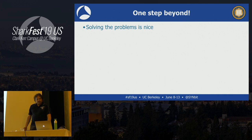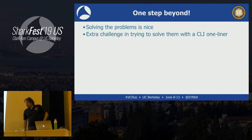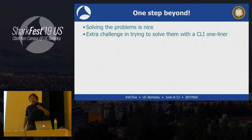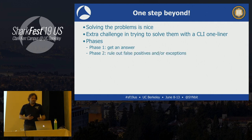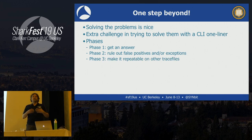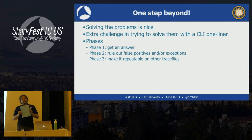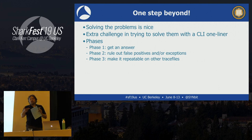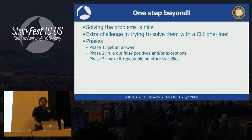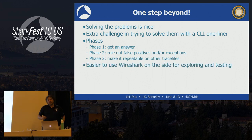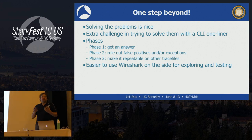Solving challenge questions is nice, but it's an extra challenge to solve them with a CLI one-liner. I want to make the one-liner in such a way that it doesn't only get the answer but also rules out false positives for that specific capture file — and ideally makes it repeatable for any capture file answering the same question. For me it's easier to use Wireshark when exploring because it's a GUI, but you can do the same with T-Shark.